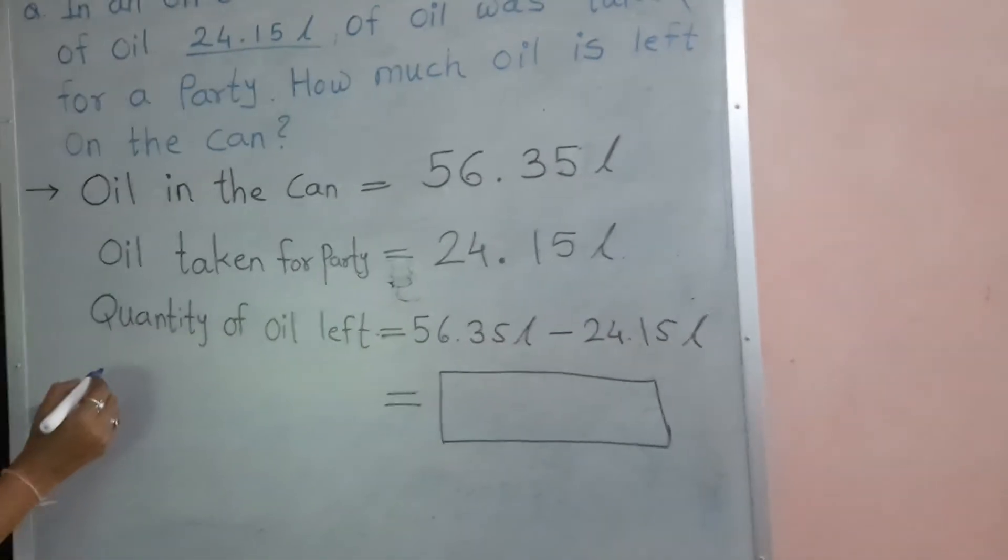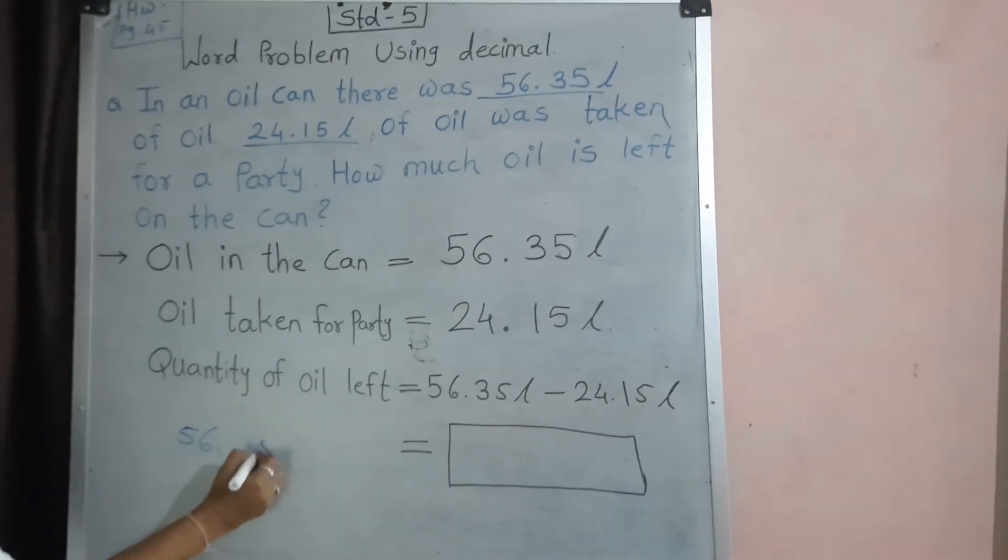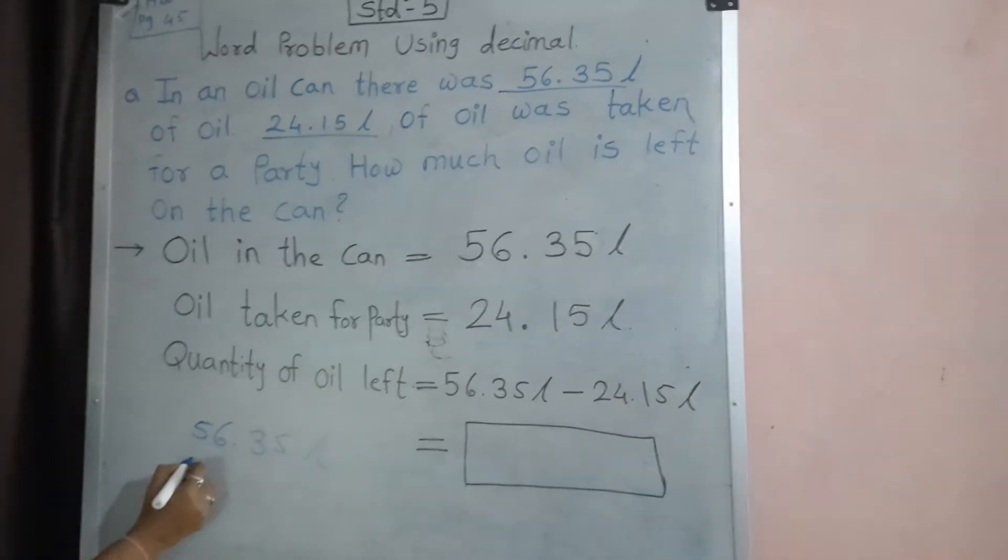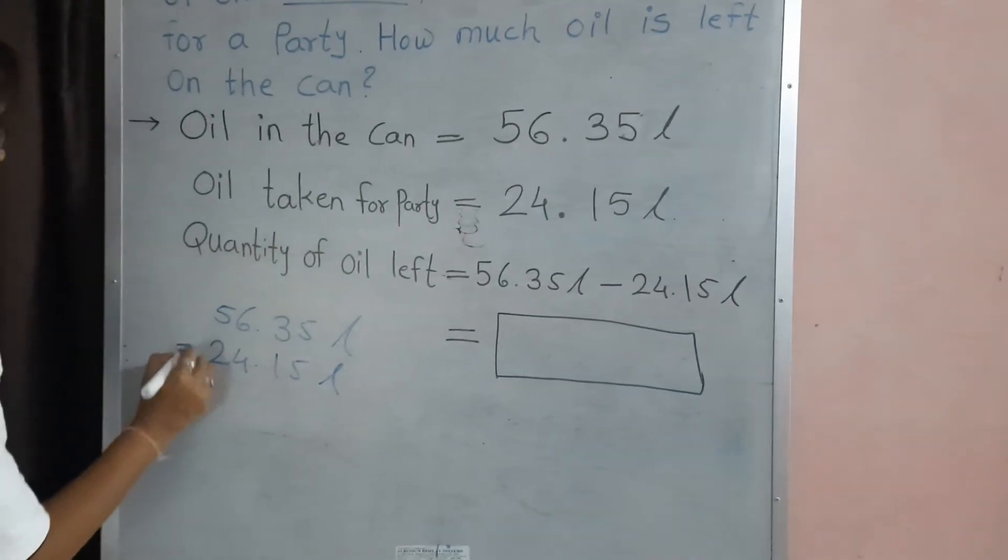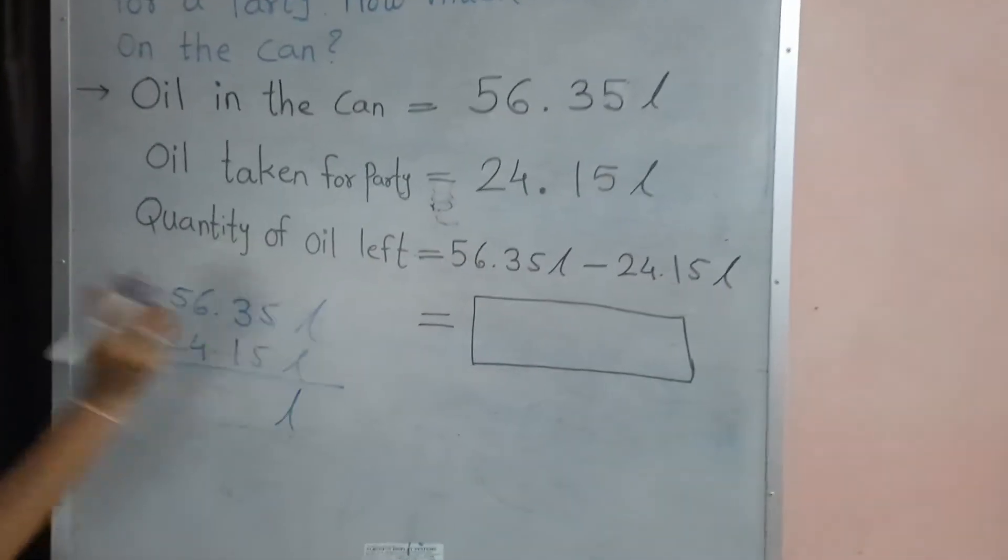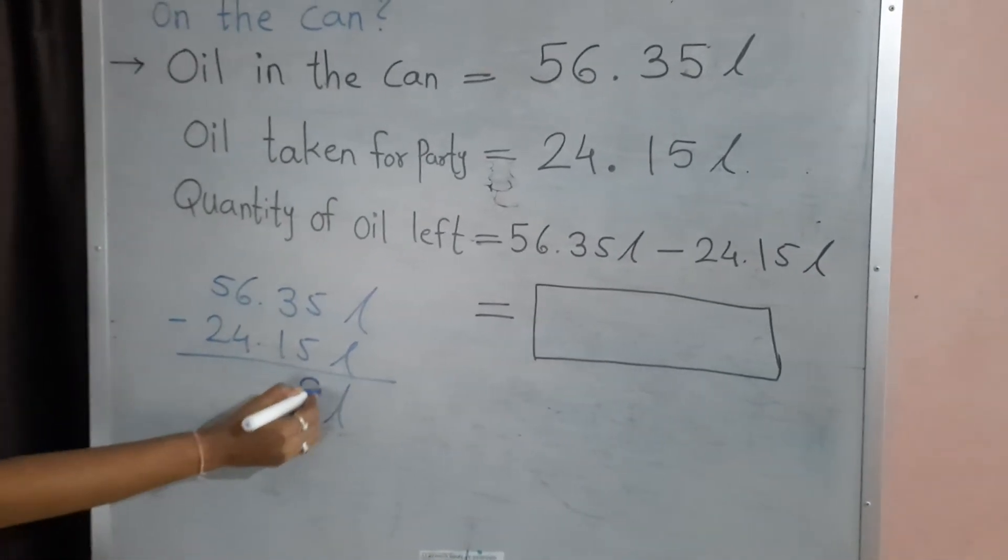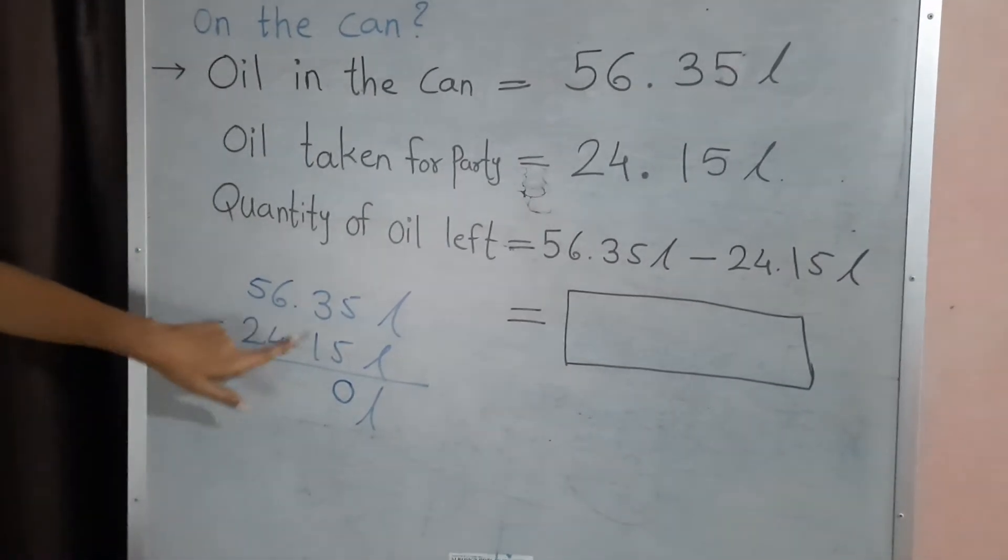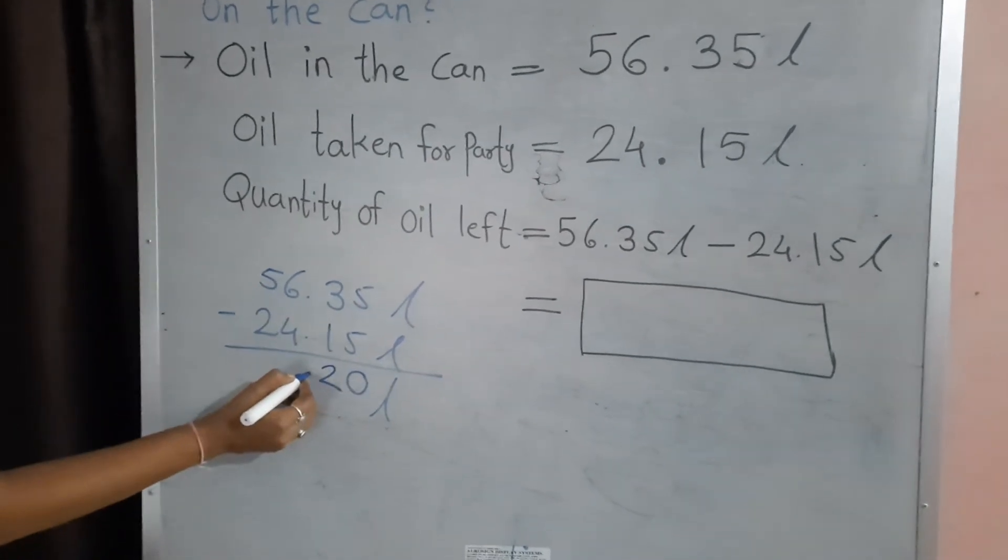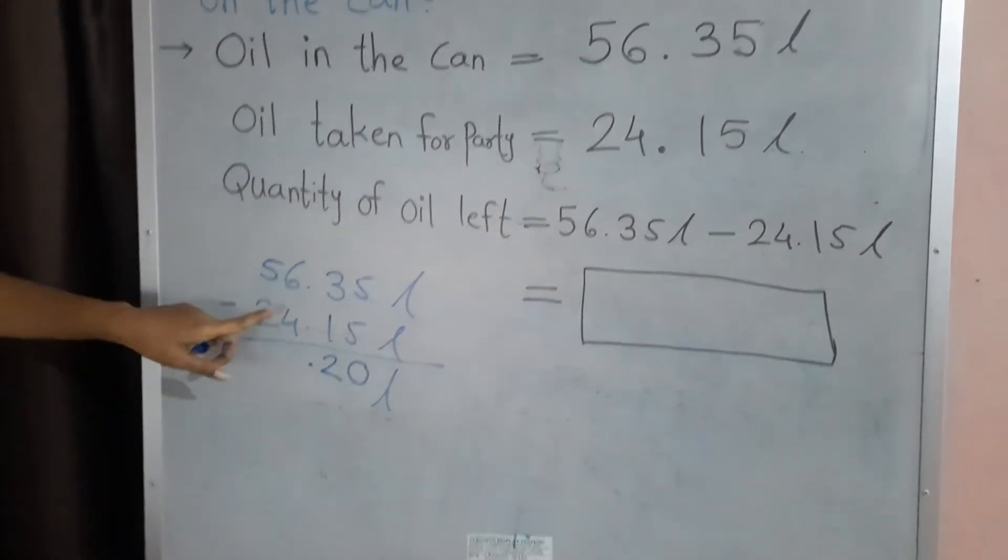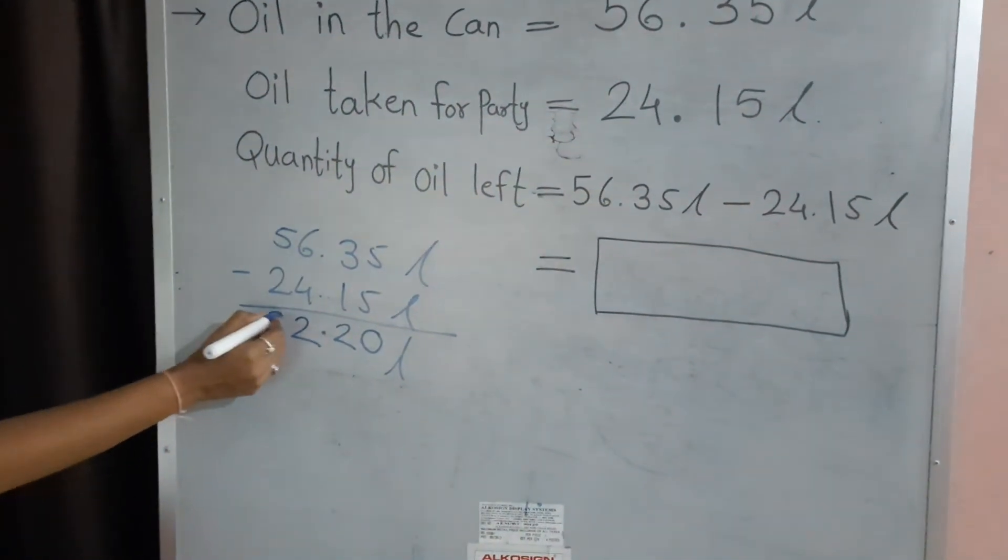Look at here. We just do the subtraction. That is a simple subtraction. 5 minus 5, 0. 3 minus 1, 2. Then the decimal point. 6 minus 4, 2. And 5 minus 2, 3.